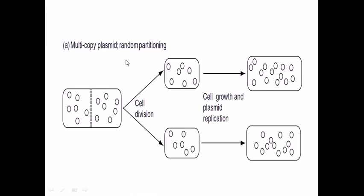There are two types of strategies. One strategy is that you must produce a huge number of plasmids inside your cell, and that ensures that after the cell division each cell gets enough number of plasmids.